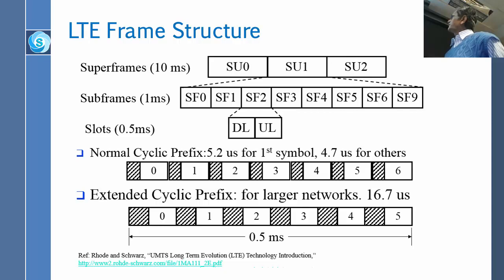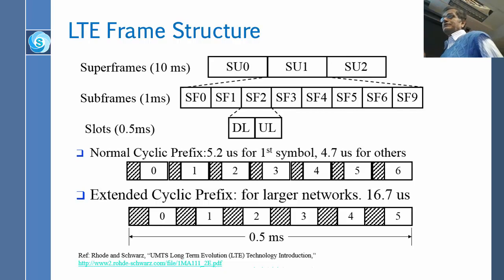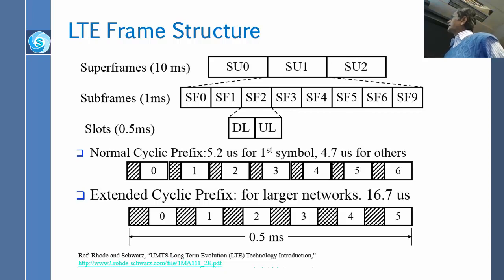There is a gap between these symbols which is called the prefix. In this case, you have a 5.2 microsecond gap for the first symbol and 4.7 microseconds for the remaining six. So 6 times 4.7 is about 30 microseconds, plus 5.2 gives roughly 35 microseconds total. You subtract that from the slot duration and you get the symbol size.